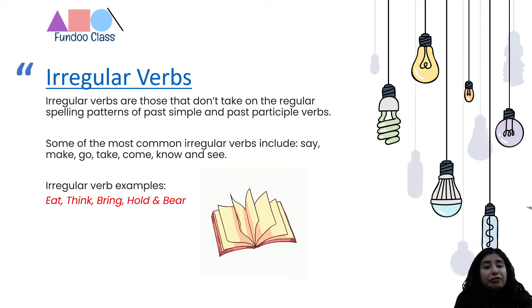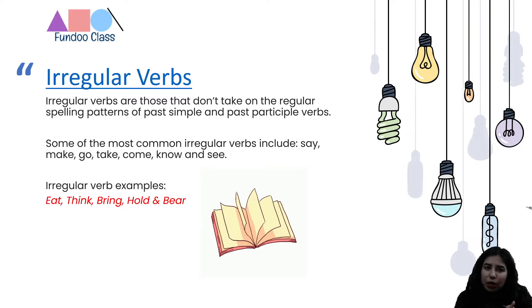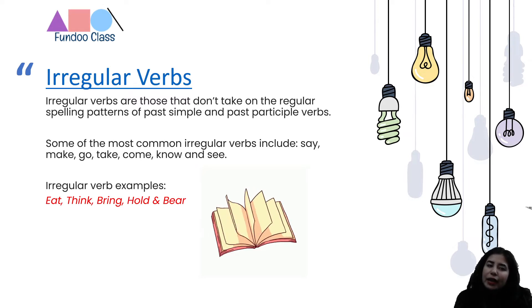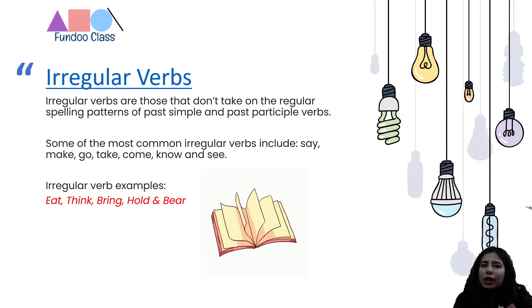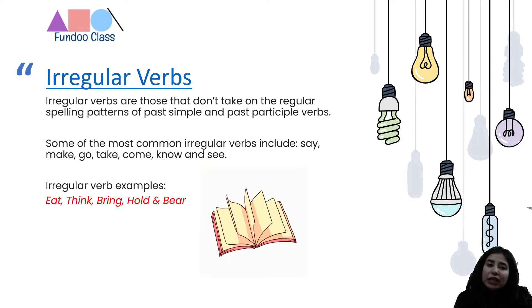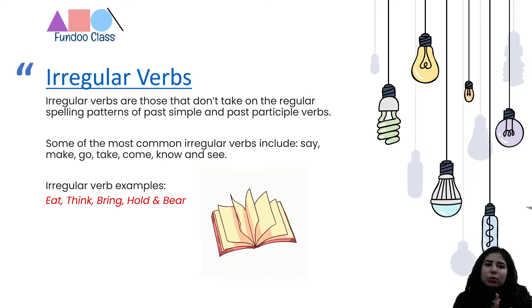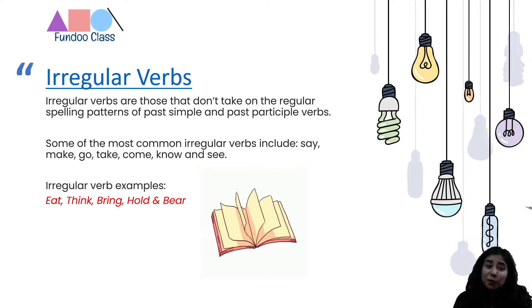The prefix 'ir-' is put before 'regular' and it changes the meaning. For example, there is the word 'repairable' and you put 'ir' before it, so it becomes 'irreparable' — it absolutely changes the meaning. Irreparable means that which cannot be repaired. So regular's opposite would be irregular. Regular verbs follow a conventional set spelling pattern, while irregular verbs do not have a conventional spelling pattern that can be observed.